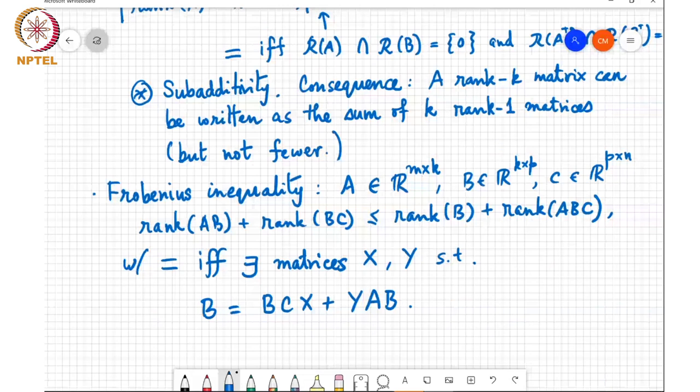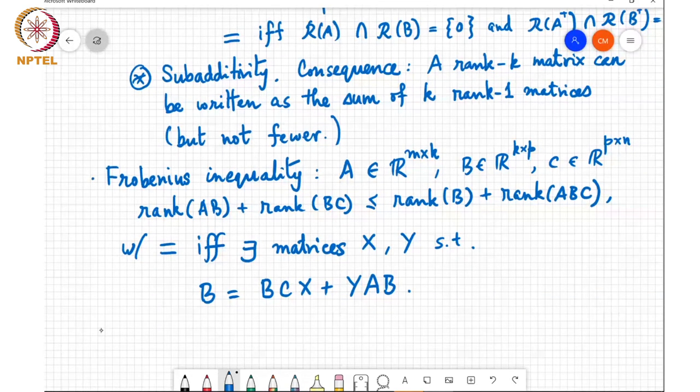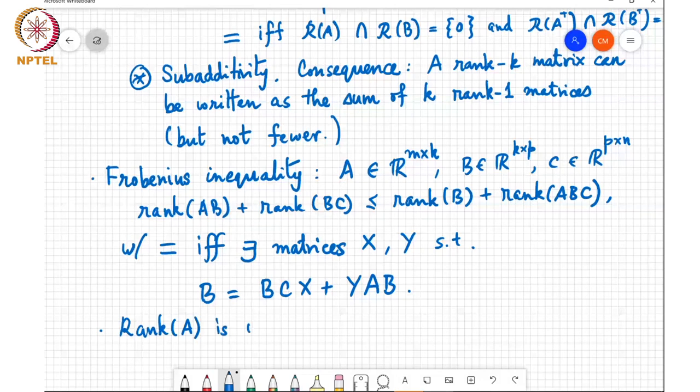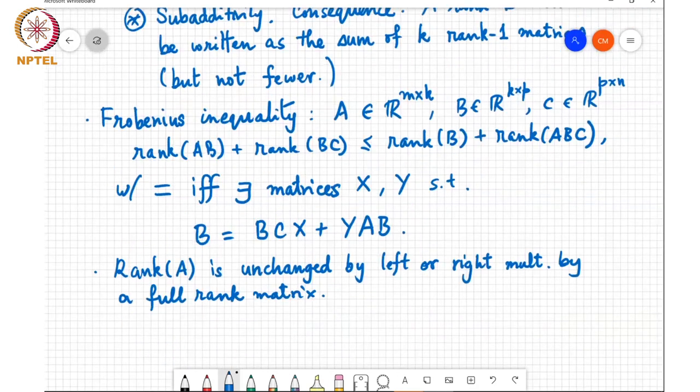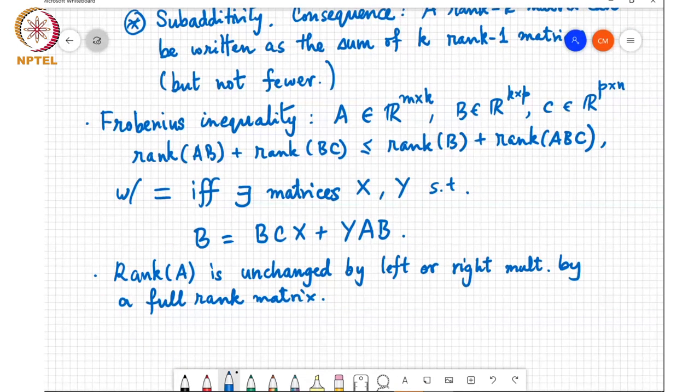Just one or two more properties. One is that rank of A is unchanged by left or right multiplication by a full rank matrix. You cannot decrease the rank, nor can you increase the rank by left or right multiplication. Of course, you cannot increase the rank - we've already seen that rank of AB is less than or equal to min of rank A and rank B. But you cannot decrease the rank by left or right multiplication by a full rank matrix.